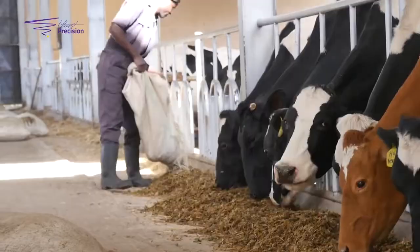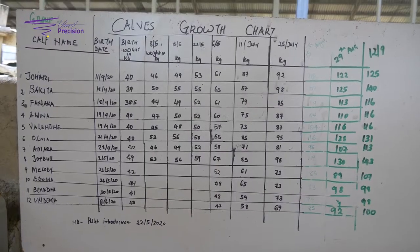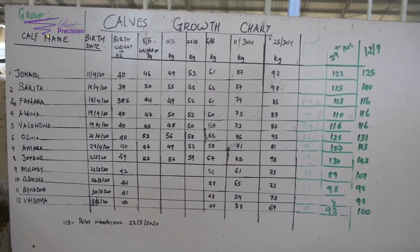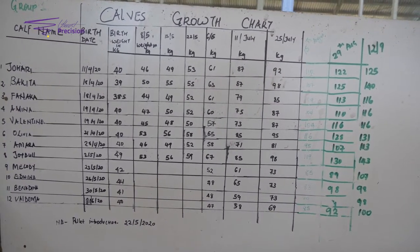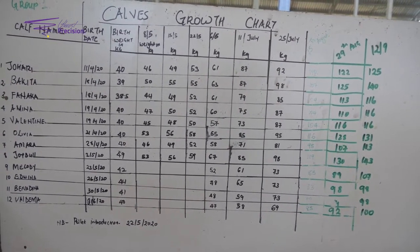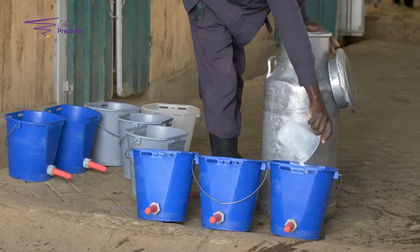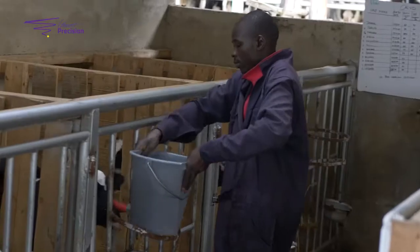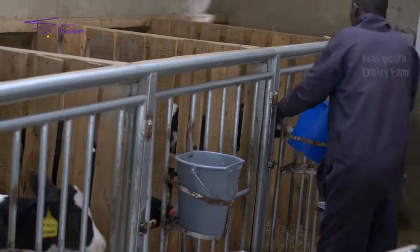The second part we move to is young stock management, or what people call calf rearing or calf care. You will notice some areas overlapping, because when you talk about feeding, you'll also see feeding featuring under young stock. Here we look at how calves are handled or taken care of. We first check the documentation of the calves — how they are registered, how they are identified — and also how the calves are housed, how they are feeding, and the general outlook of the young stock.